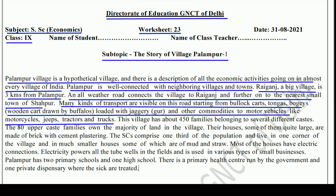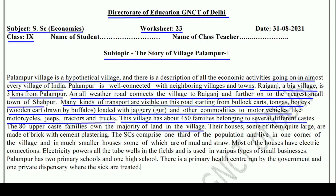This village has about 450 families belonging to several different castes. Is gaon mein 450 families rehti hain jo ki different caste ki hain. The 80 upper caste families own the majority of land in the village — yaani yahan ki jo 80 upper caste families hain, unke paas gaon ki zyada tar zameen hai aur unka adhikaar hai uske upar. Their houses, some of them quite large, are made of brick and cement plastering — yaani woh pakke makaan bane hain cement aur eet ke.